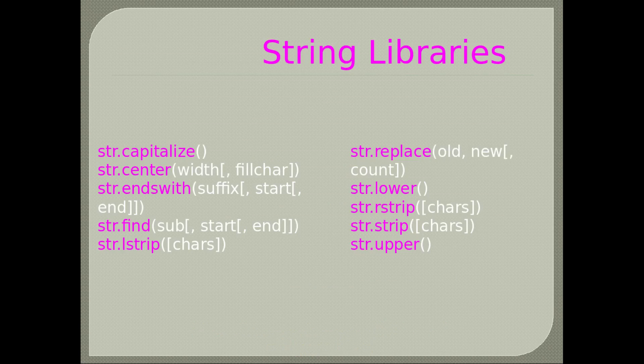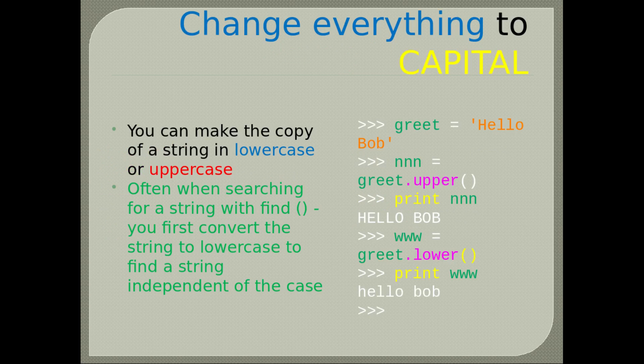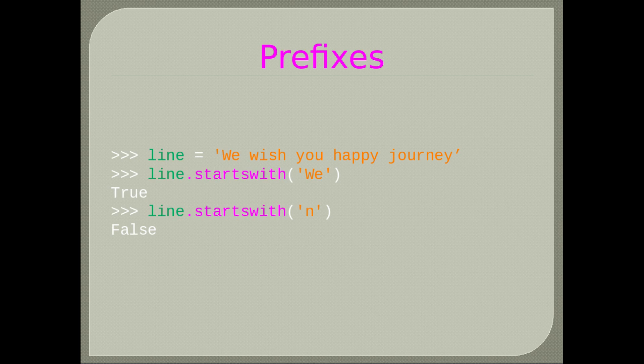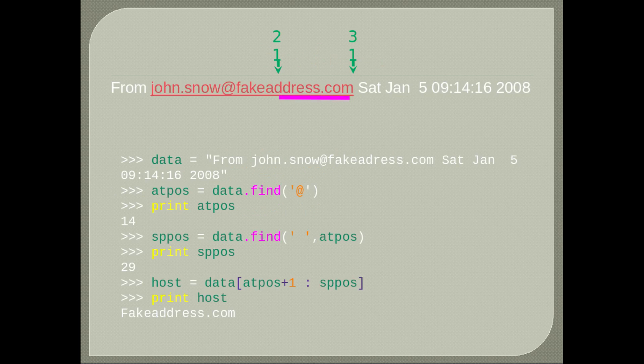Here are other commonly used string methods. You write the string, then a dot, then the name of the method. Some require parameters in their parentheses, some do not. You can make a copy of a string in lowercase or uppercase. Often when searching with find(), you first convert the string to lowercase. By using the find method, you can access a particular item in the string, for example finding the @ sign in an email address to get its index position.